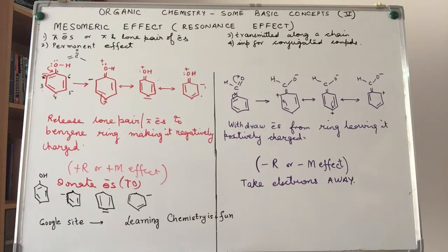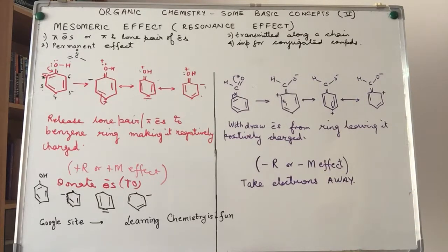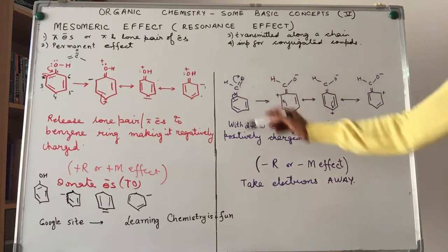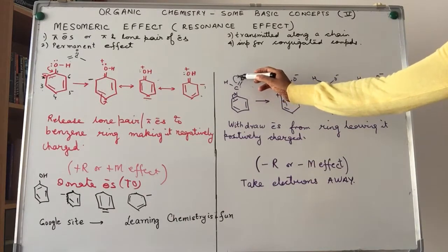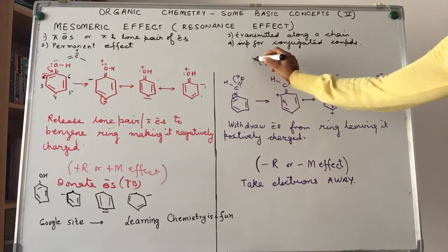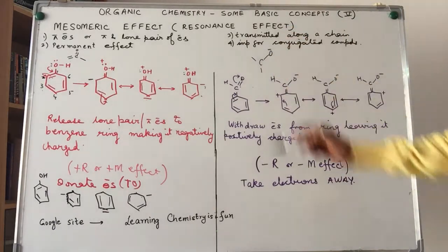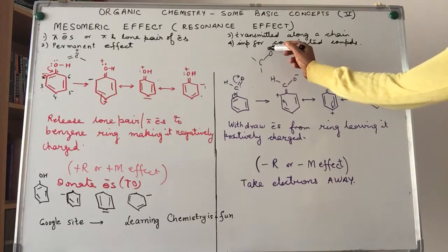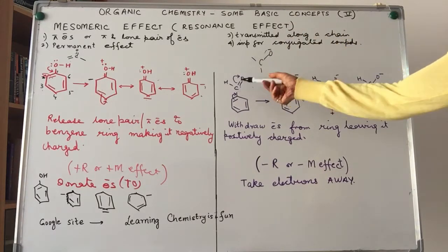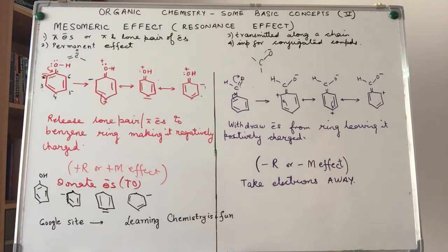Let's take a second example: benzaldehyde (C6H5CHO). Carbon and oxygen are bonded by a pi bond — there is a double bond between C and O. Oxygen, being more electronegative, has a tendency to withdraw electrons from the carbon. This leaves carbon short of electrons; it needs to gain them from somewhere. One possibility is it takes back the electrons from oxygen, returning to where we started, or it withdraws electrons from the benzene ring pi electron cloud.